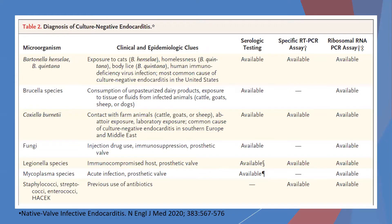Specific clinical and epidemiologic clues can help identify the possible cause of culture-negative endocarditis from these organisms. For many of them, serological tests as well as ribosomal RNA and PCR assays are available.